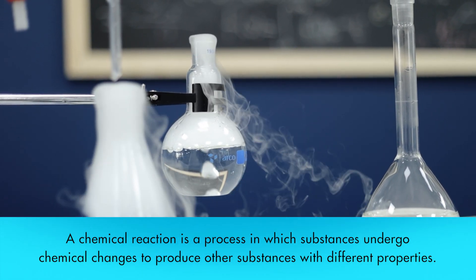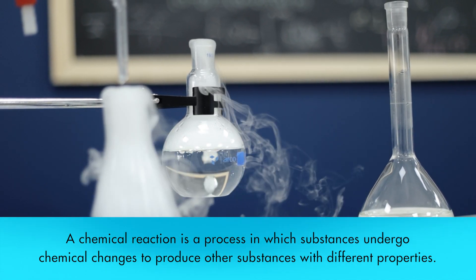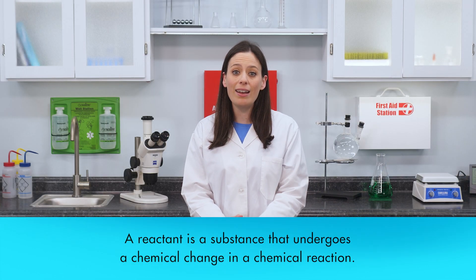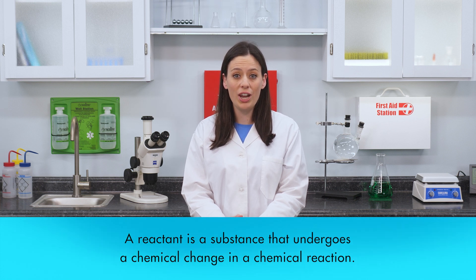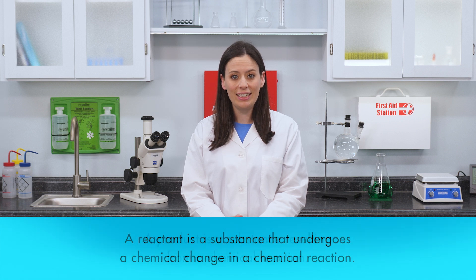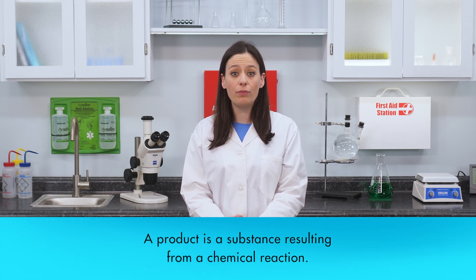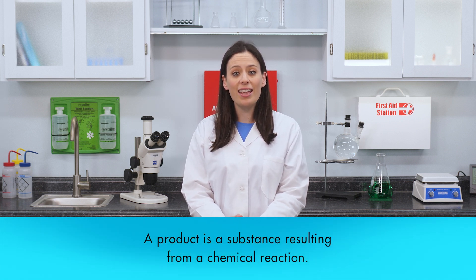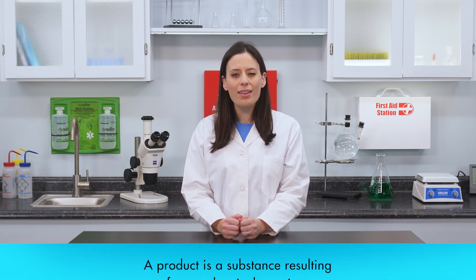A substance that undergoes a chemical change in a chemical reaction is a reactant. A substance resulting from a chemical reaction is a product. The types of chemical reactions vary depending on the reactants, the products, and the kind of chemical change involved.